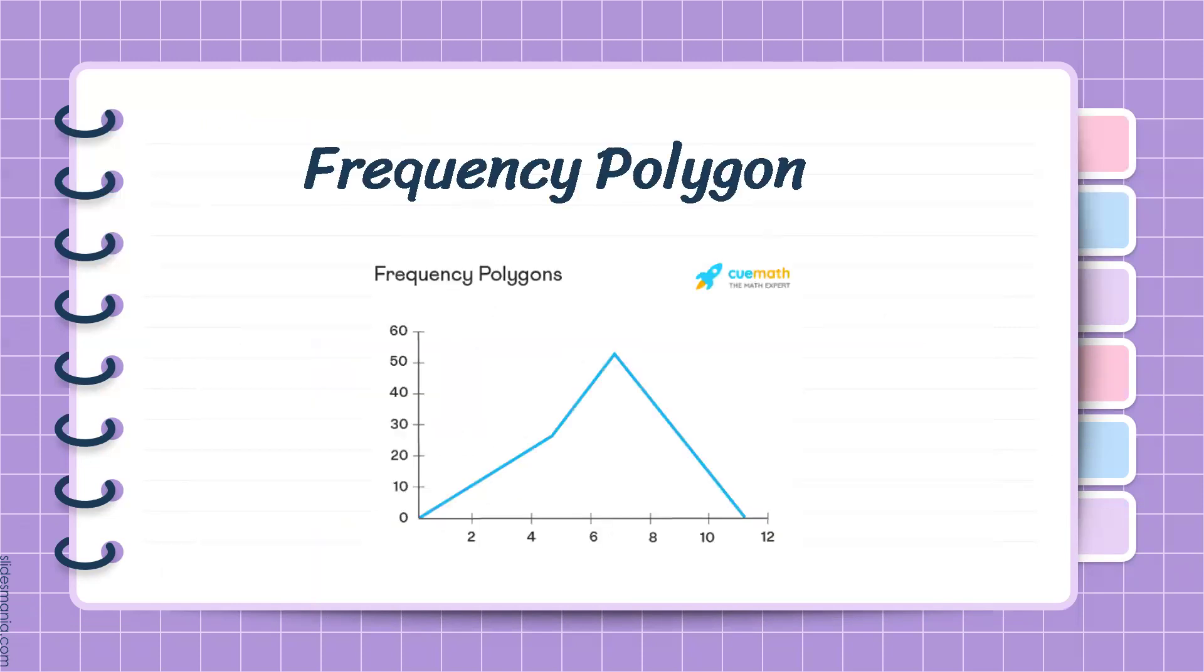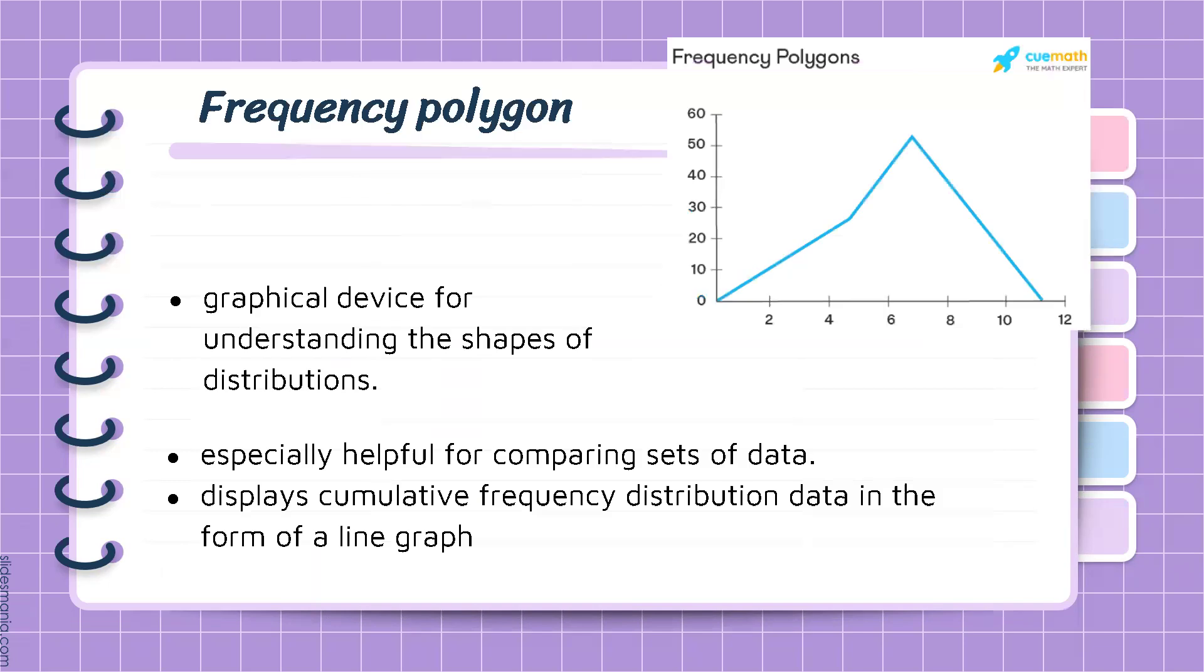Now we go to frequency polygon. Frequency polygon is a graphical device for understanding the shapes of distributions. It is especially helpful for comparing sets of data. It displays cumulative frequency distribution data in the form of a line graph.